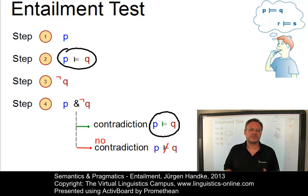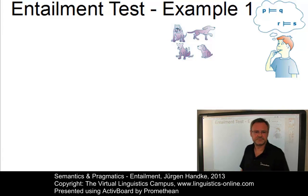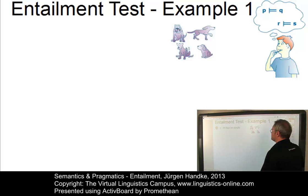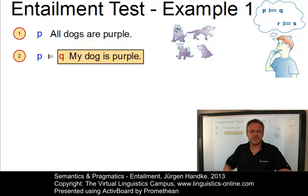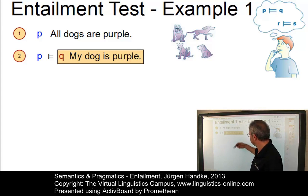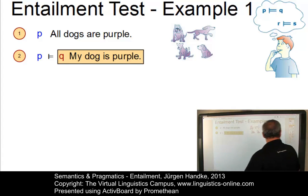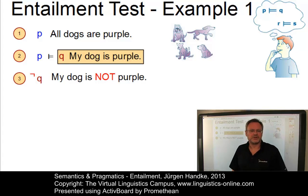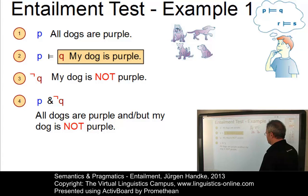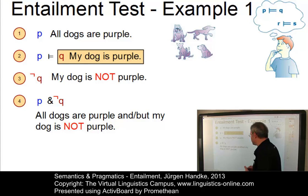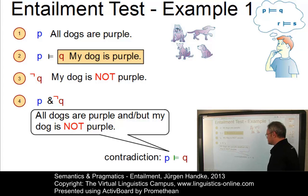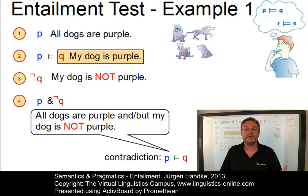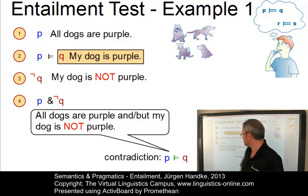Let us apply this test to some real examples. Step one: our proposition P is 'All dogs are purple.' Step two: assume proposition Q to be entailed by P — 'My dog is purple.' Step three: make Q negative — 'My dog is not purple.' Step four: conjoin P and not-Q — 'All dogs are purple and my dog is not purple,' or 'All dogs are purple but my dog is not purple.' Evaluating the result: we clearly have a contradiction. If all dogs are purple, my dog cannot be not purple. In other words, Q is correctly entailed by P.